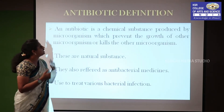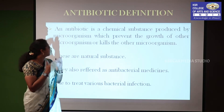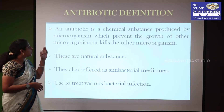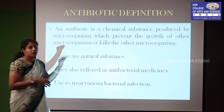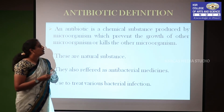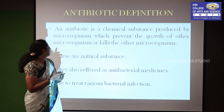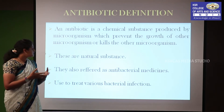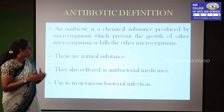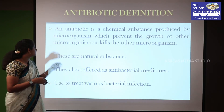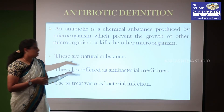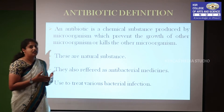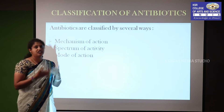Next, the antibiotic definition. An antibiotic is a chemical substance produced by microorganisms which prevents the growth of other microorganisms or kills them. These are natural substances also referred to as antibacterial medicines. They can be produced as medicines like antibacterial and antimicrobial, used to treat various bacterial infections and infectious diseases.